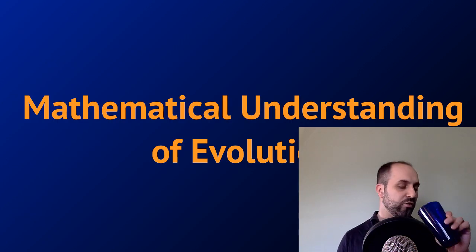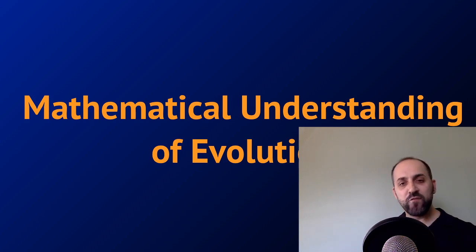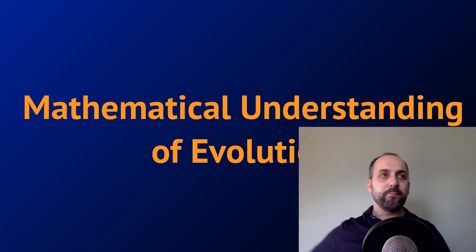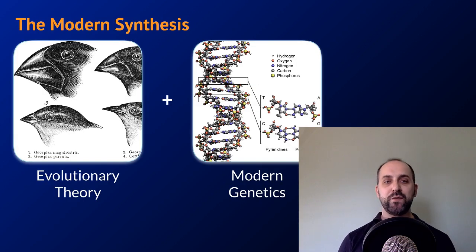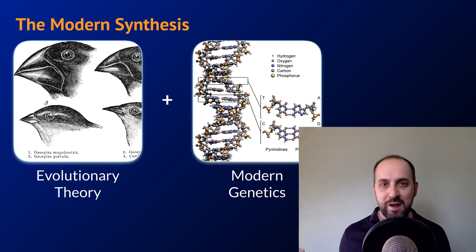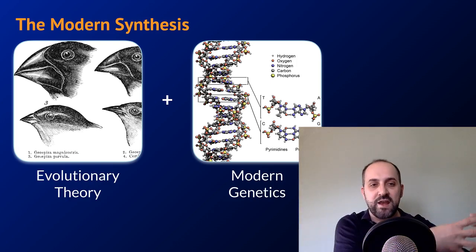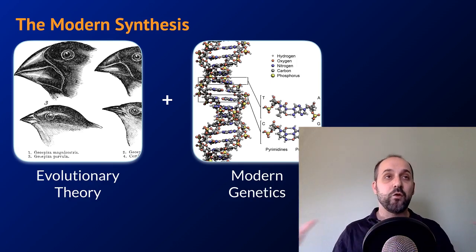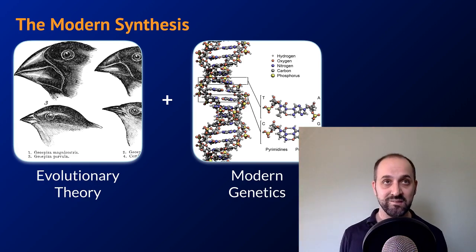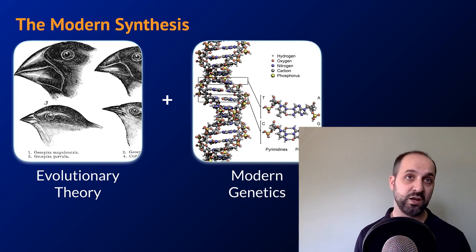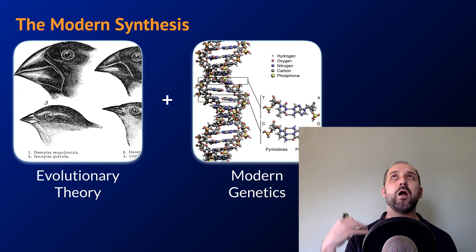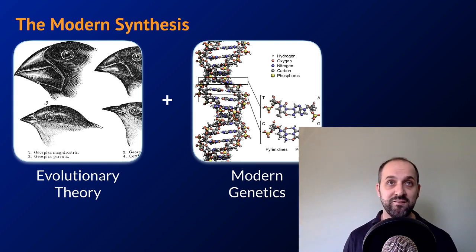We're going to talk about the mathematical understanding of evolution, the modern version of evolutionary theory. We need to talk briefly about the modern synthesis. Darwin does his thing, writes his book, dies — he doesn't know anything about modern genetics at all. Over the next hundred years, people come on the scene, modern genetics totally develops and explodes. We have to take our Darwinian understanding and connect it to our modern genetic understanding — and all together that is known as the modern synthesis. We're not going to talk a lot about genetics here, but we need to get some terms because we can't have this conversation without it.